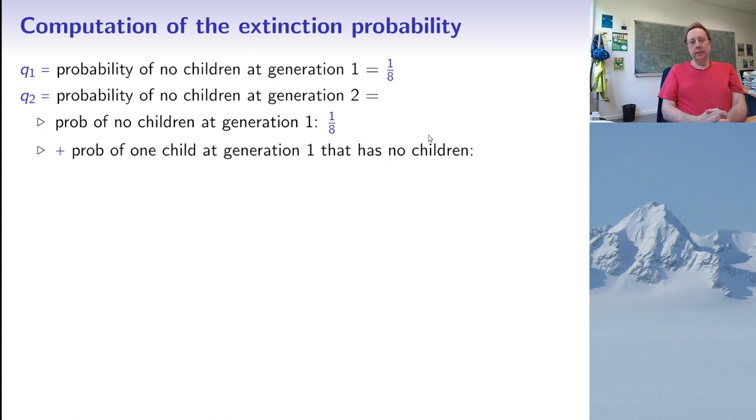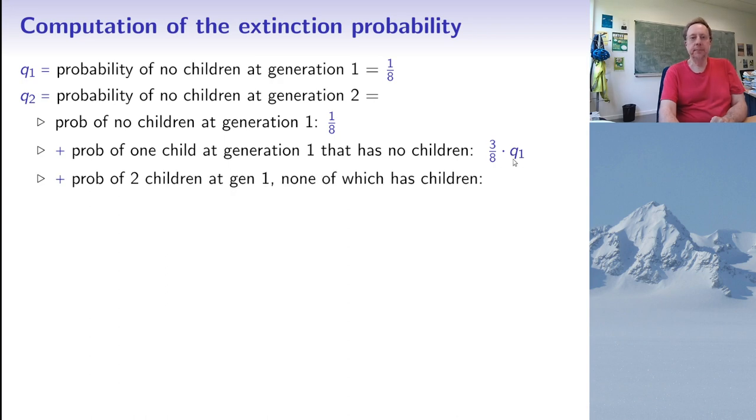Now how about the probability Q2 of having no children at generation 2? Well this we can now compute by looking at different cases. So the first case is of course that there's no child at generation 1. And of course there can't be any children at generation 2. And we've already seen that the probability of this happening is 1 over 8. But another possibility is that there is one child at generation 1, but this child has no children.